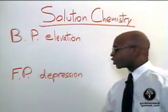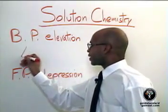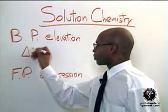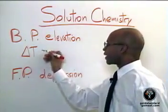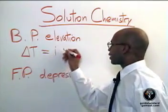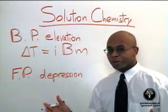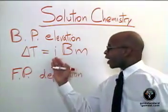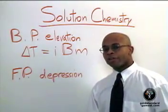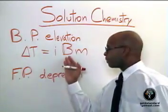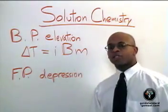In terms of boiling point elevation, it can be calculated and the delta T — which is the change in temperature leading to the elevation of the boiling point — is given by iBm. I stands for the number of particles, B is the boiling point constant, and M is the molality.